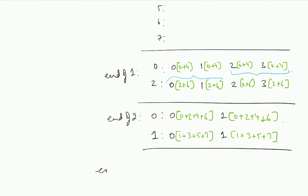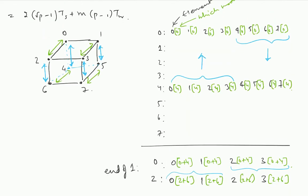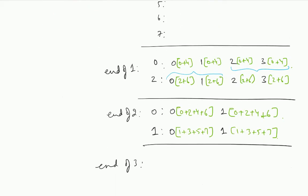In the third iteration we are going to communicate along the last dimension where the last bit differs. By now you can see what happens. Node 0 will have the 0th element summed up over all the nodes: 0 plus 1 plus 2 plus 3 plus 4 plus 5 plus 6 plus 7. Similarly, the first node will have the first element summed up across all the nodes, and so on.